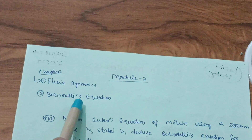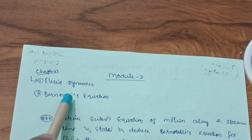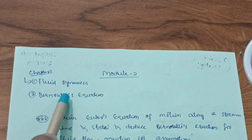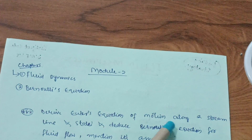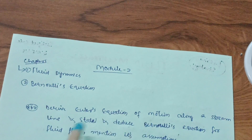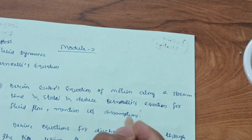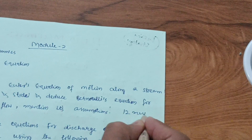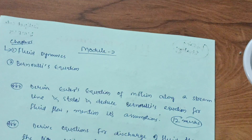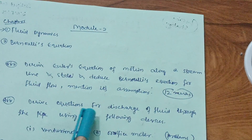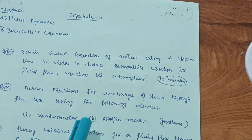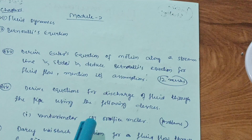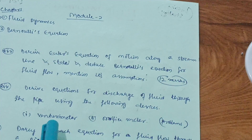Module 2 consists of two chapters: fluid dynamics and Bernoulli's equation. The super important question — worth 12 marks — is: derive Euler's equation of motion along a streamline, state and deduce Bernoulli's equation for fluid flow, and mention its assumptions. They will definitely ask this. Next, derive the equation for discharge of fluid through a venturimeter and orifice meter.